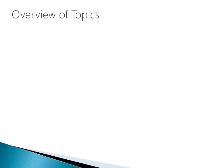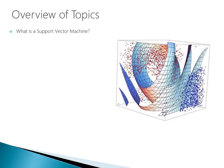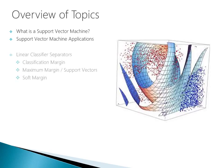An overview of topics that we're going to get into today: what is a Support Vector Machine? In the data science community, the algorithms can be very complex to understand, even for the practitioners. So what I'm going to try to do is simplify what a Support Vector Machine is in the easiest way that I can so that you can fortify this concept in practice. I want to talk about Support Vector Machine applications, how we can utilize them. Then we'll get into linear classifier separators, the classification margin, what a maximum margin and support vectors are, and the soft margin approach.